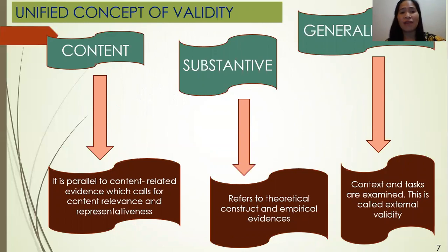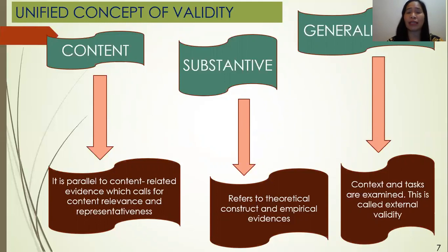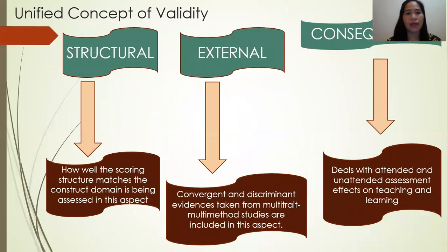Six distinct construct validity aspects were presented. First, content, which is parallel to content-related evidence and calls for content relevance and representativeness. Second, substantive, which refers to theoretical constructs and empirical evidences. Third, generalization, where context and tasks are examined — this is called external validity. Fourth, structural, which assesses how well the scoring structure matches the construct domain. Fifth, external, which is convergent and discriminant, including answers from multi-trait, multi-method studies. Sixth, consequential, which deals with attended and unattended assessment effects on teaching and learning.